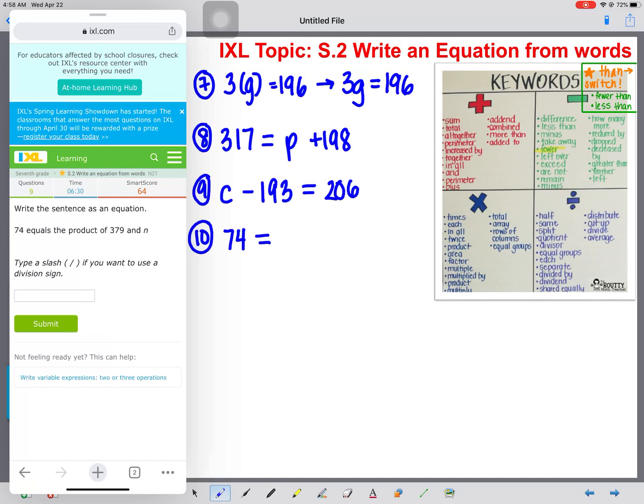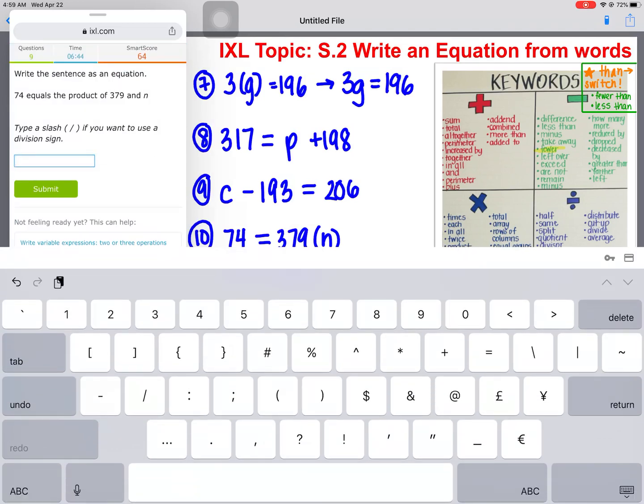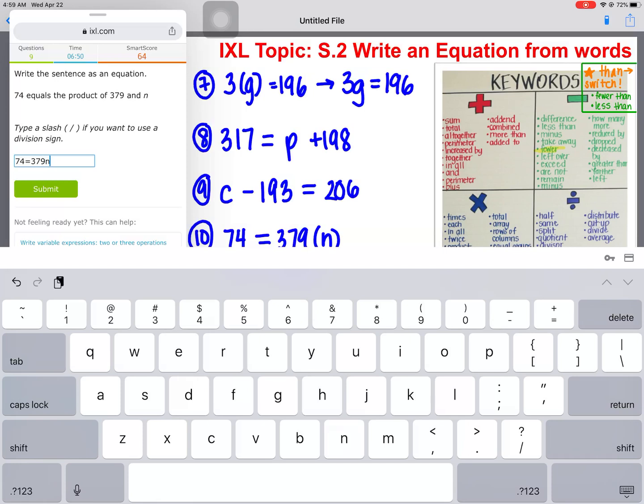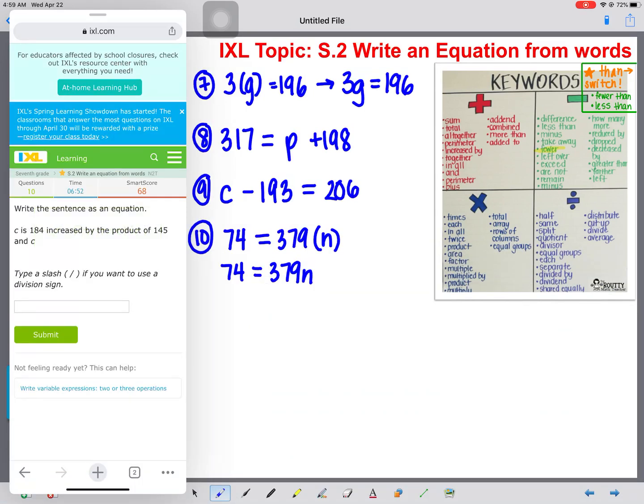So we're going to type that in, C minus 193 equals the product of 379 and N. So 74 equals product is a multiplication keyword. So we're going to multiply 379 times N, which we know can be written as 74 equals 379N right next to each other. So 74 equals 379N. Okay, let's just do a couple more and then you'll be free.